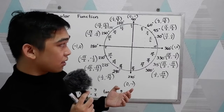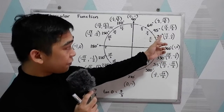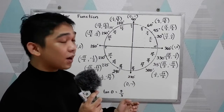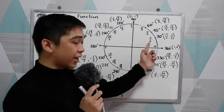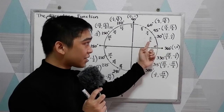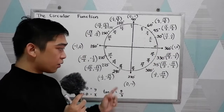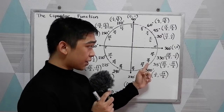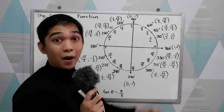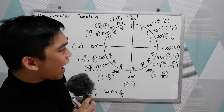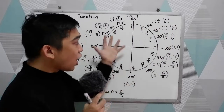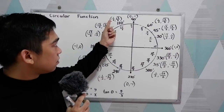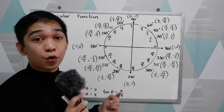If you notice, we have the following special angles: 30, 45, 60, 90, 120, and so on. And the equivalent measure in radians: 30 is equal to π/6, 45 is equal to π/4, 240 is equal to 4π/3, 315 is 7π/4, and 360 is equal to 2π. We also have the coordinates of our points in the unit circle. For example, at 120 degrees, the coordinates are (−1/2, √3/2).